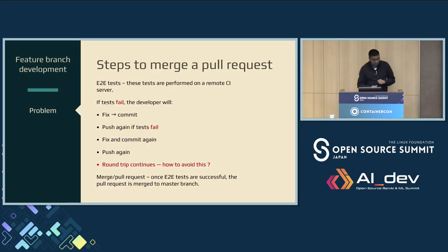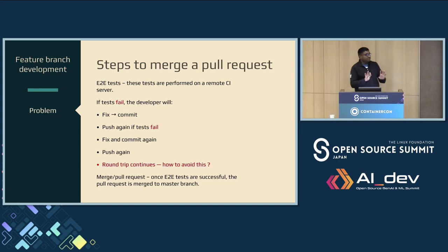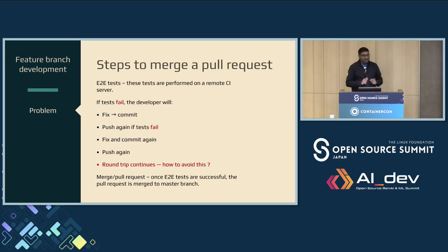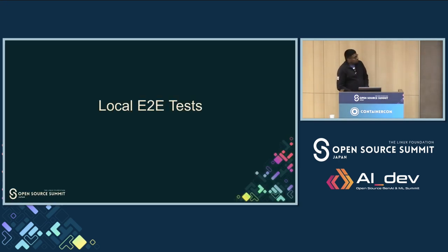When you push, generally these remote end-to-end tests are run on a remote server rather than locally. In our cases, tests might run for a couple of days or three to four hours at least. If something fails, the feedback cycle back to the developer is huge. End-to-end tests are performed on a remote CI/CD server — probably Jenkins. If a test fails, the developer fixes it, commits locally, pushes again, updates the merge request. The test runs on the remote server for a few hours and comes back saying your tests have failed again.